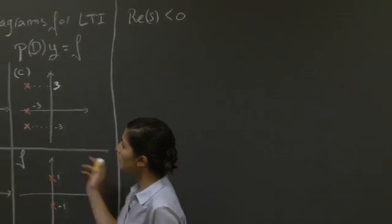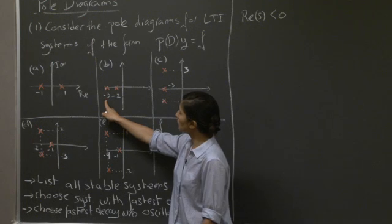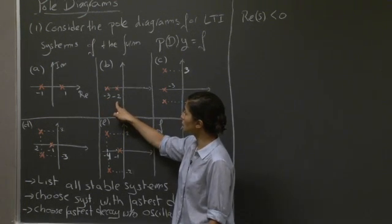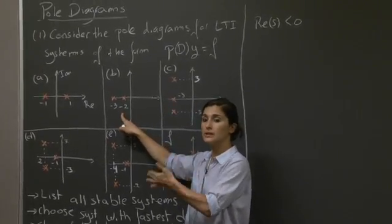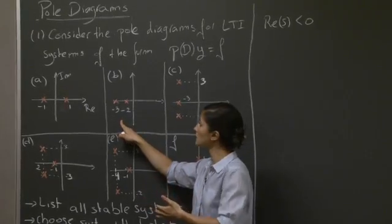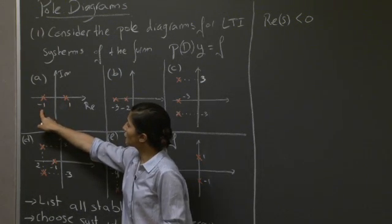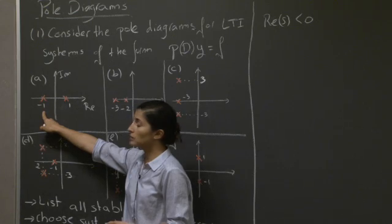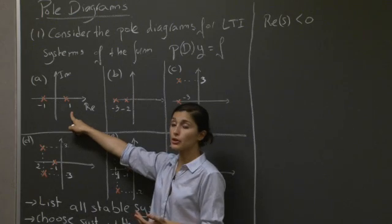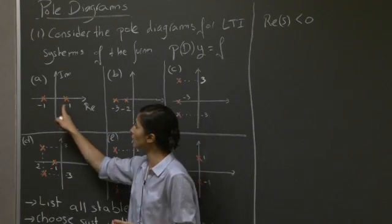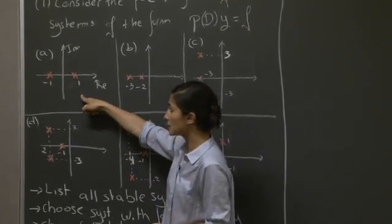Looking at our pole diagrams, diagram B has two poles with real parts minus 3 and minus 2, which would generate decaying exponentials of the form e^(−2t) and e^(−3t) at large time. In diagram A, we have poles at minus 1 and plus 1. The plus 1 gives a term that diverges as e^(t), so the behavior at long time diverges and does not go to zero — this is not a stable system.